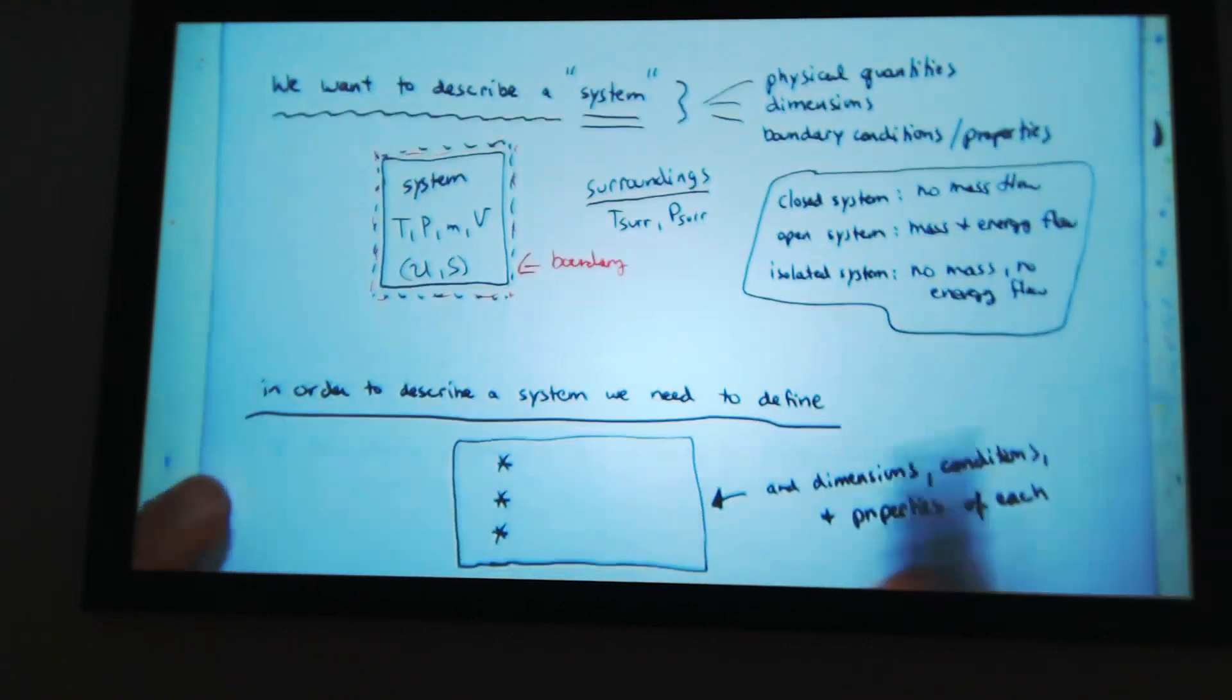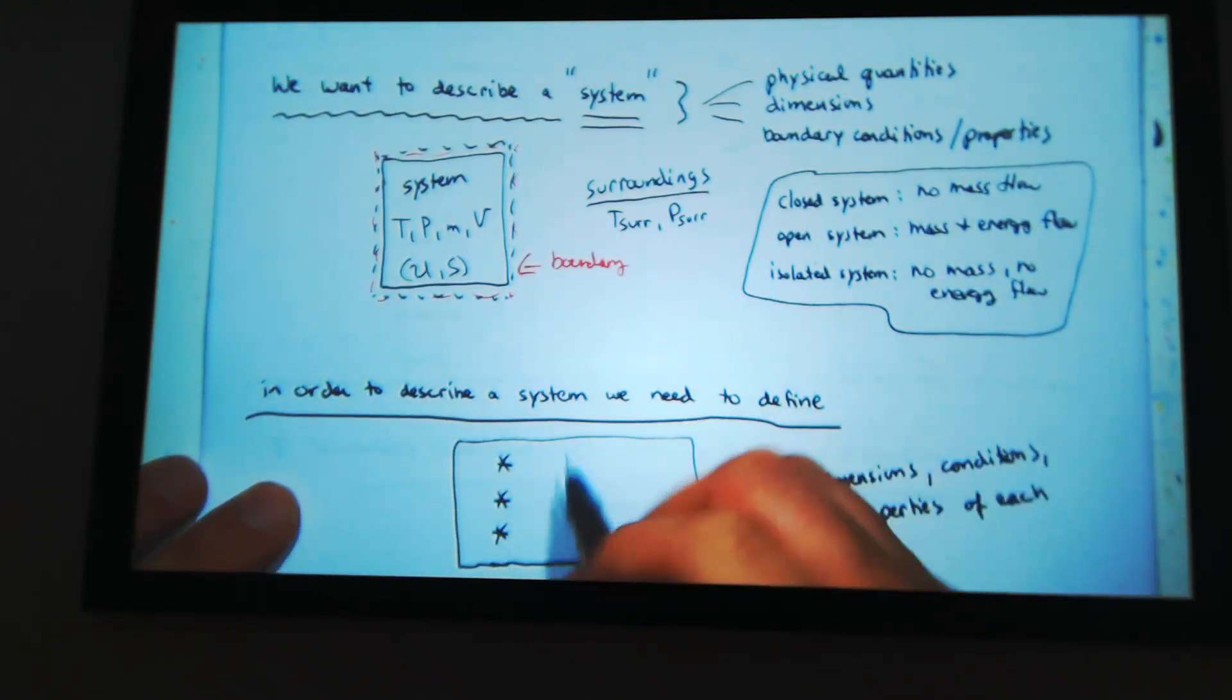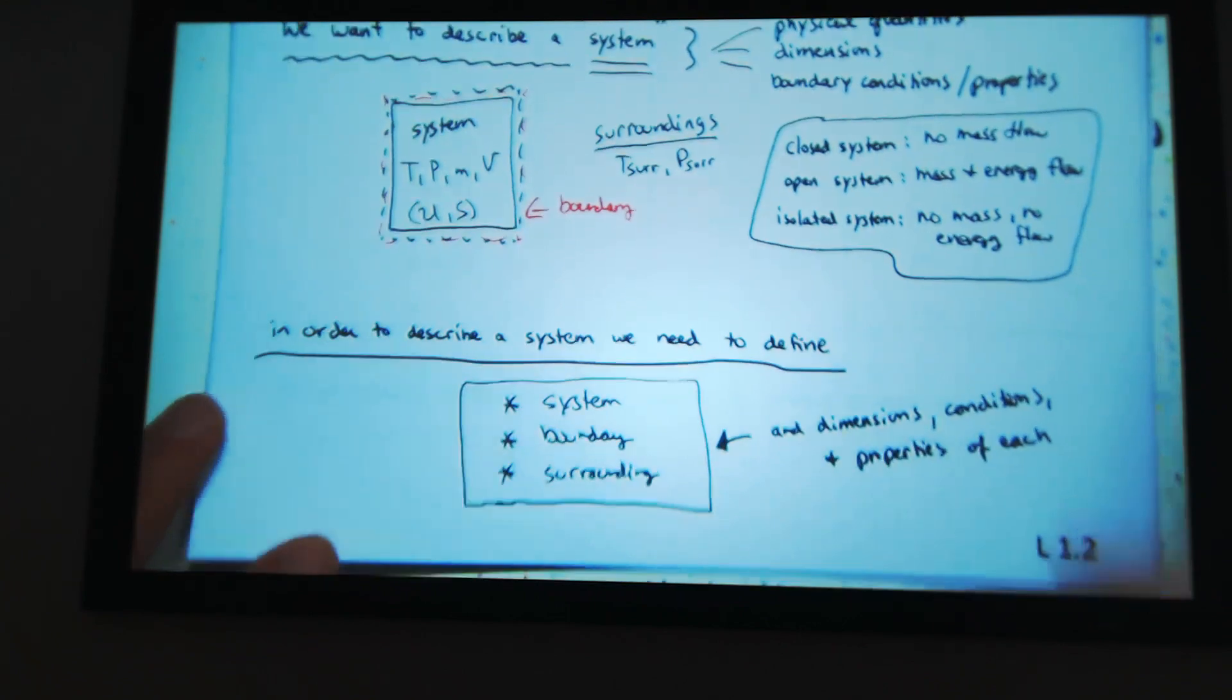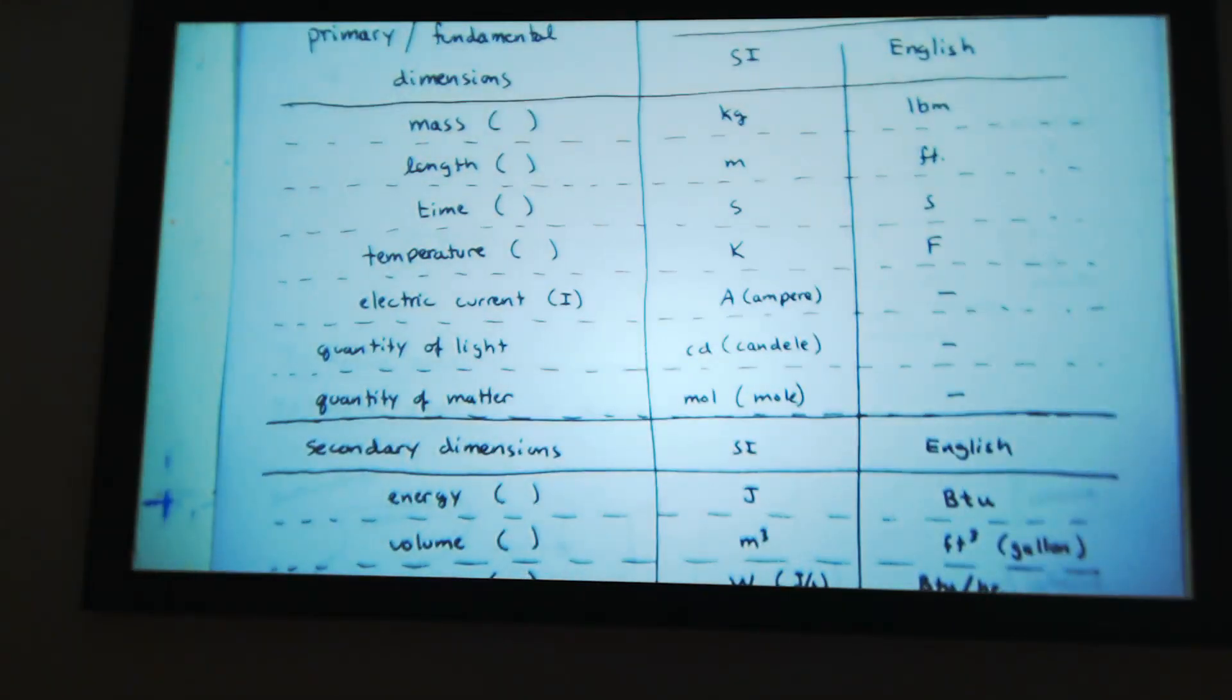So in order to describe a system, we need to define the system. That's kind of redundant, but related to that, boundary and surroundings. There's dimensions and conditions and properties for all of those.